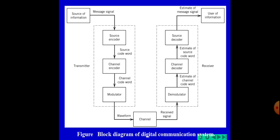This is the digital communication block diagram summary. The overall structure includes: source of information, transmitter, channel, receiver, and user. On the transmitter side there is the source encoder and channel encoder followed by the modulator. On the receiver side there is the demodulator, channel decoder, and source decoder, each performing separate functions.